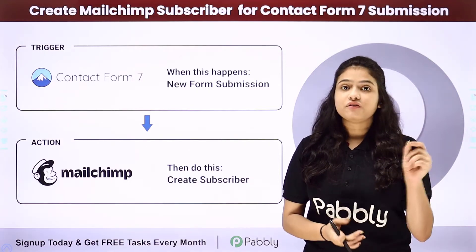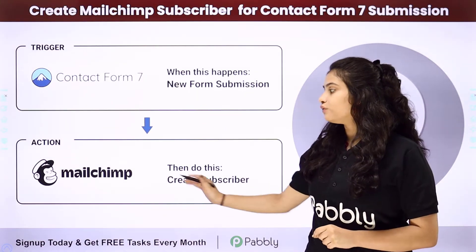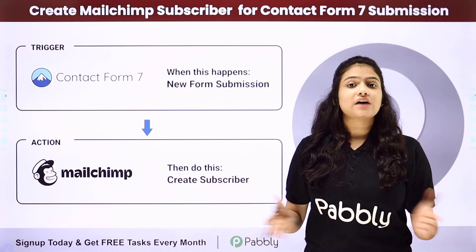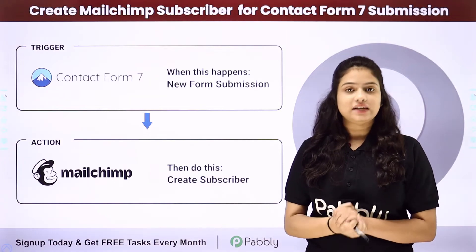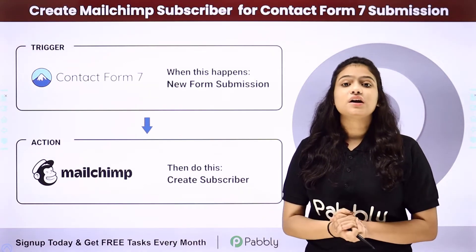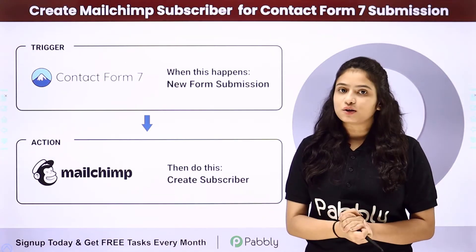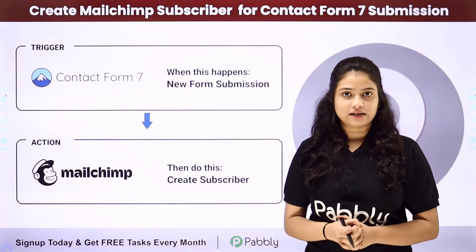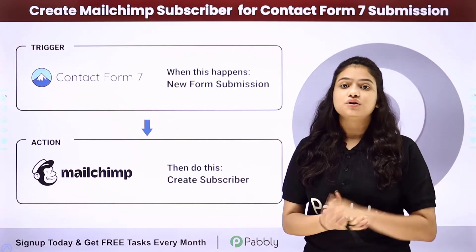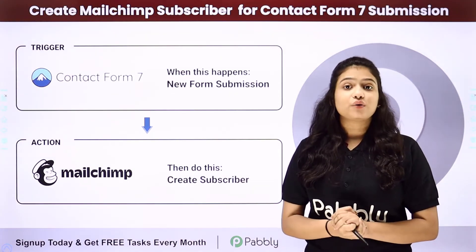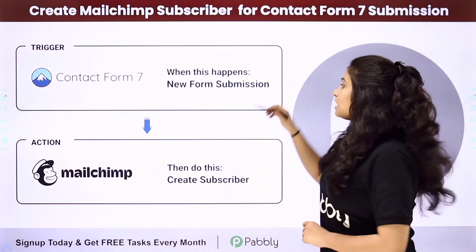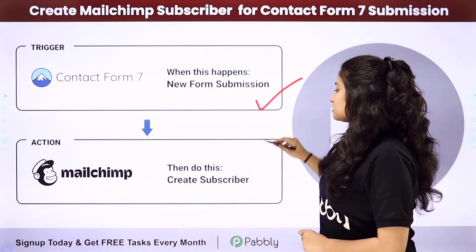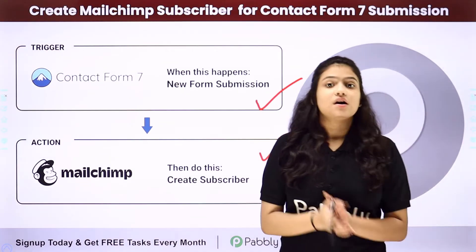For that, we will have to integrate Contact Form 7 with MailChimp. And because they do not have any kind of native integration between them, we are going to use an automation and integration software — Pabbly Connect — in order to connect both of them. We have Contact Form 7 in our trigger and MailChimp in our action.